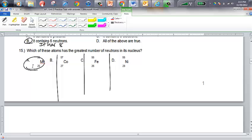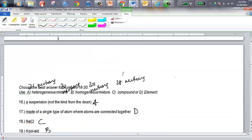This situation number, excuse me, letter A, 56 over 25 manganese would have the greatest number of neutrons because it would have 31. This situation would have 30. This would be 30 neutrons, and this would be 28 neutrons.